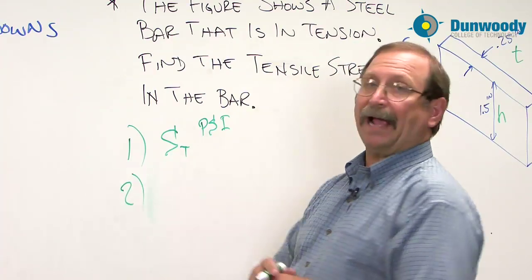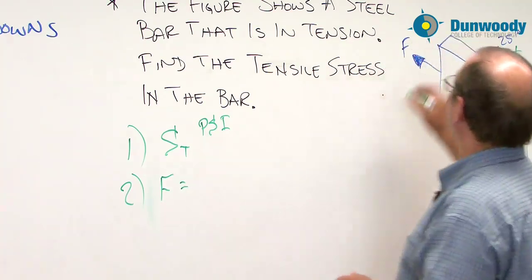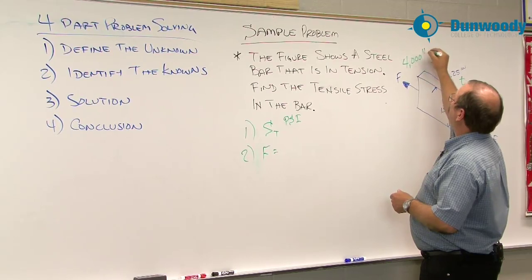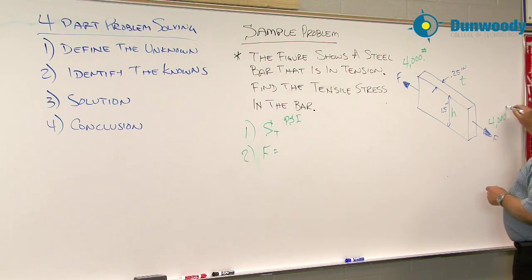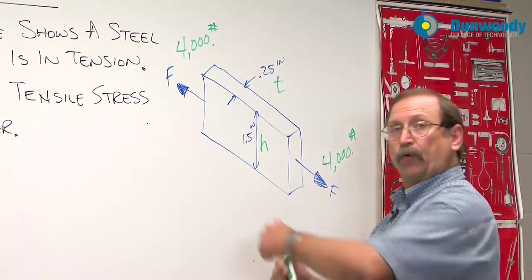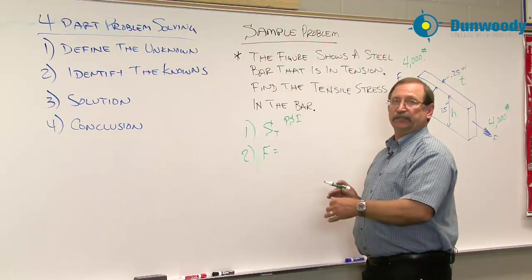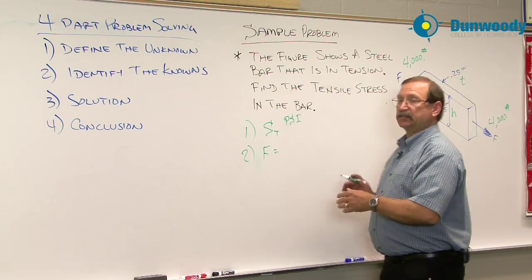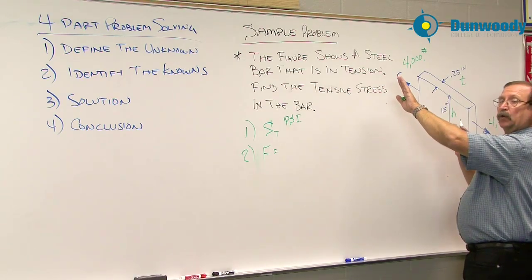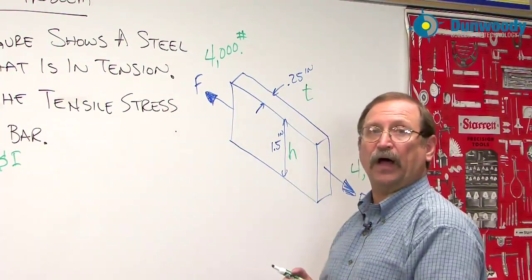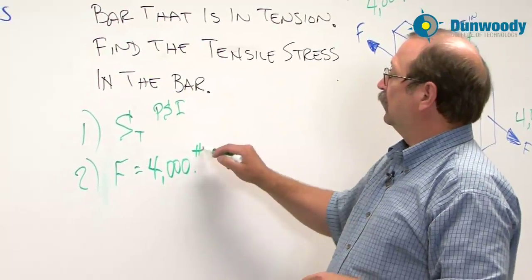Second step, what do we actually know? Well, in this problem we know that there's a force and that force is 4,000 pounds. Since it's a two-force member, we have 4,000 pounds going in each direction. Now our force here is not 8,000, it's just 4,000 pounds. Because as we break this object, we have an area going this way with 4,000 pounds. We have a separate area going this way with 4,000 pounds. So our force in our knowns is 4,000 pounds.